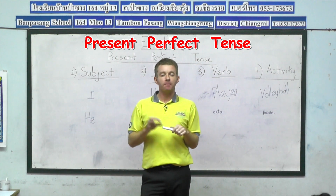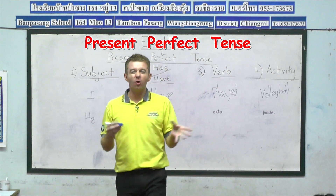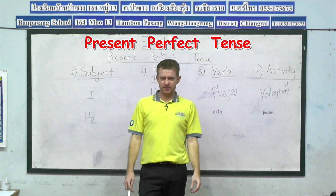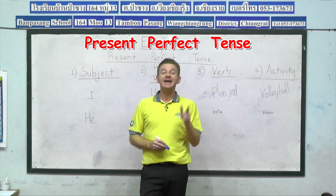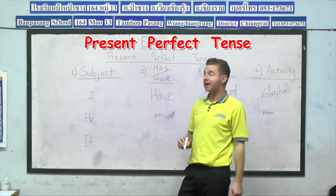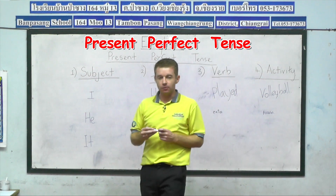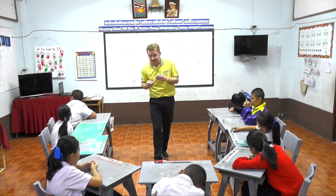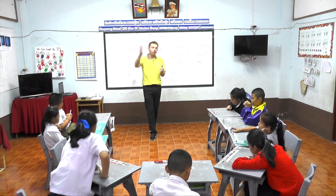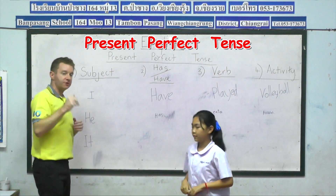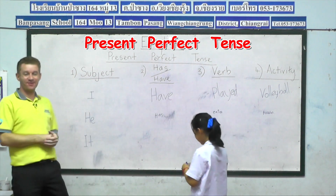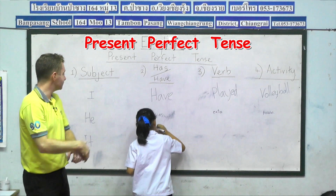Now let's do one more together, but this time we're not going to talk about a boy or a girl — we'll talk about one of our pets. If we talk about cats or dogs or chickens, we don't say he, we don't say she. What subject word would we use? It. Correct, we would use it. Nadia, come and join me at the front of class. So now we've got our subject: it. Would I say it have? It has. Correct. Depending on the subject, we have to choose have or has. It has.